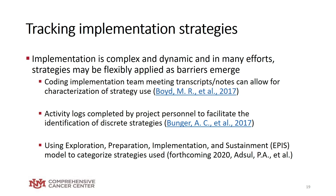For tracking implementation strategies, implementation is complex and dynamic and strategies may be applied as barriers emerge. Helpful tracking methods include coding implementation team meetings, transcripts, or notes to characterize specific strategies and how they were used. You could also create activity logs completed by project personnel to identify discrete strategies. In one forthcoming example, we used the EPIS model — Exploration, Preparation, Implementation, and Sustainment — to work with primary investigators to categorize which strategies were used in which phases.